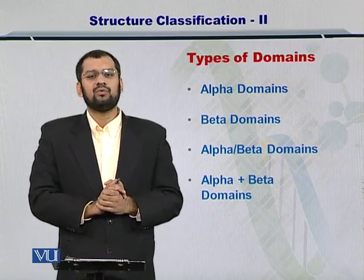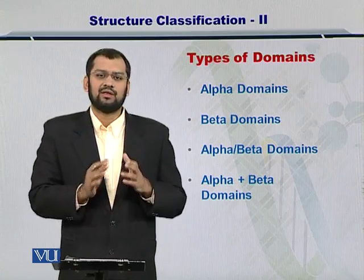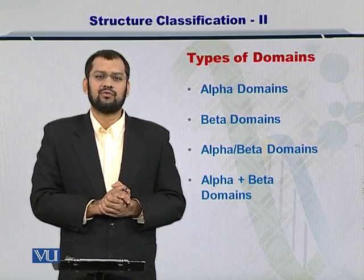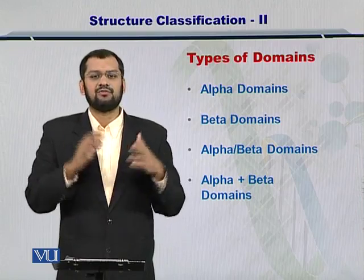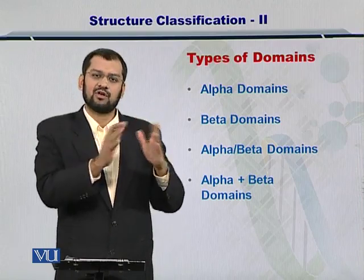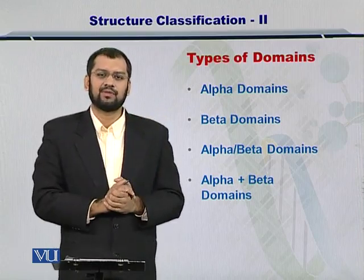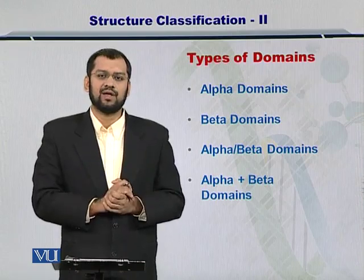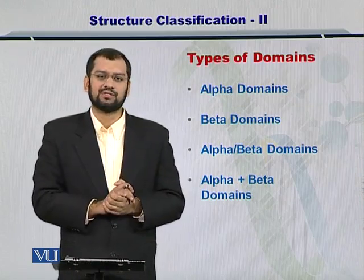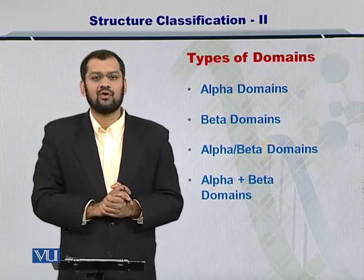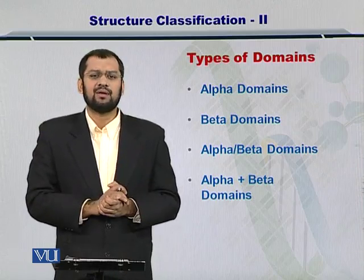Now, if you have identified the domains, you will find that there are only a limited number of domain types. For instance, there are alpha domains that consist mostly of alpha helices and perform specific functions. Then there are beta domains constituted by beta sheets, also performing specific functions. And then there are alpha over beta or alpha plus beta domains. We will look at each one of them in detail later.